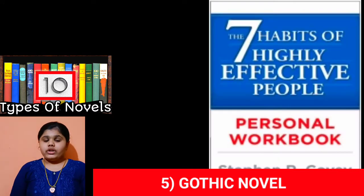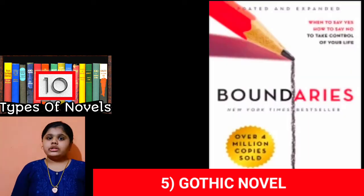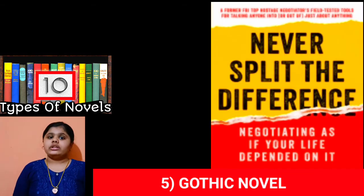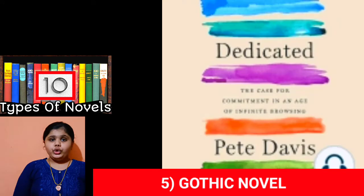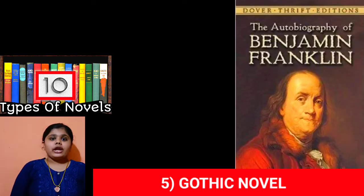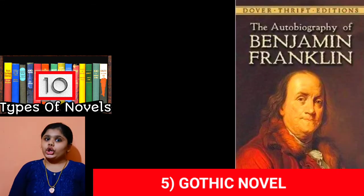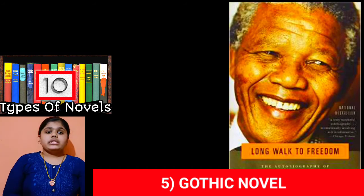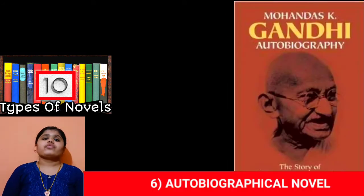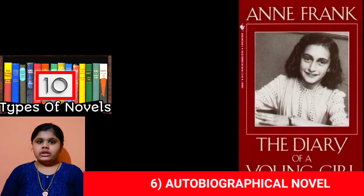The fifth type of novel is the gothic novel. Novels that include terror, horror, thriller, supernatural elements, doom, death or decay, and haunted buildings are called gothic novels. The sixth type of novel is the autobiographical novel.